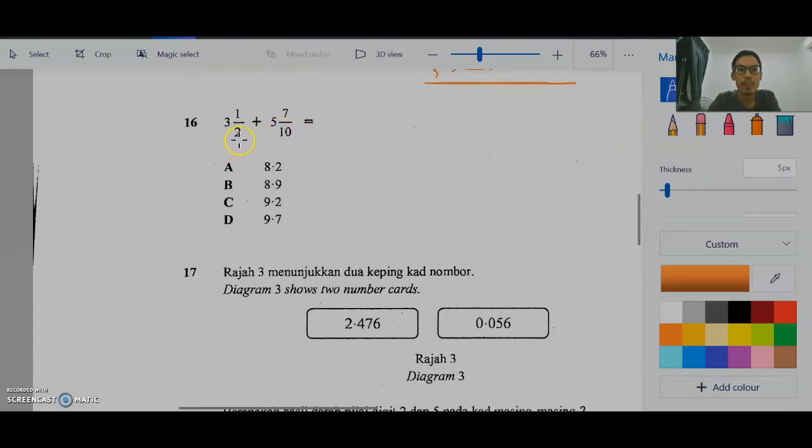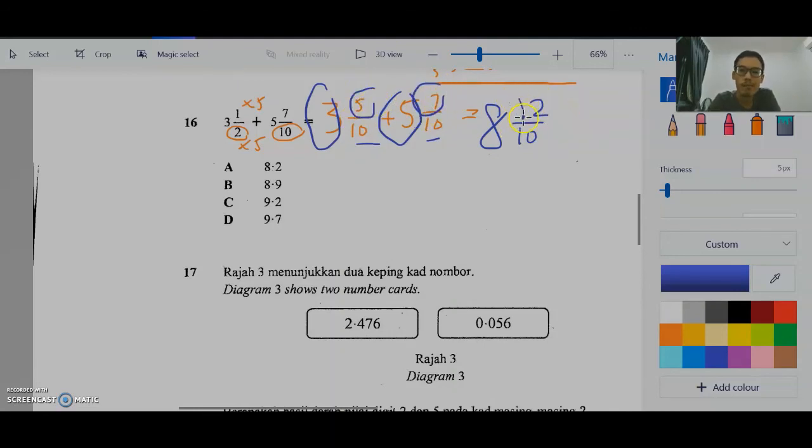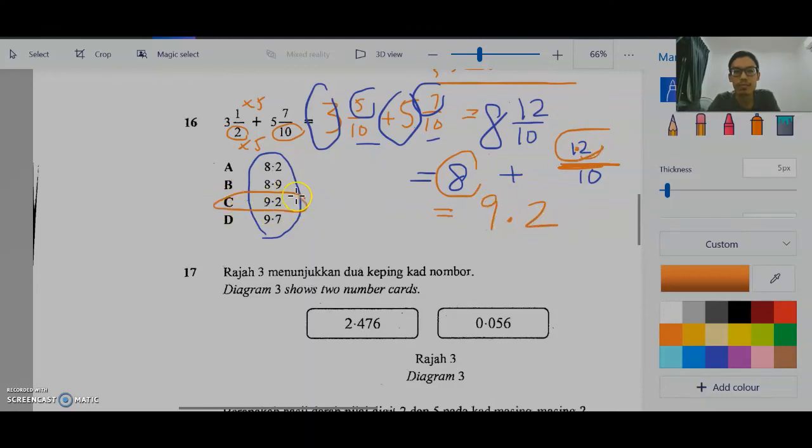Question 16. Before you plus, make the bottom number the same. Samakan nombor bawah. Kepulih darat 5. 2 darat 5, 10. 1 darat 5, 5. Tambah 7 per 10. Nombor bulat tambah dulu. 3 plus 5, 8. Nombor bawah, bottom number tak bertukar. 5 tambah 7, 12. So, what do we do now? The answers they are all in decimals. So we break it up first. Pecahkan dulu. Garisan tengah ni ialah bagi. So, 12 bagi 10 or gerak titik sekali ke tengah ialah 1.2. Gerak titik sekali ke kiri, sorry. So, 8 tambah 1.2 ialah 9.2. So, 16 the answer is C.